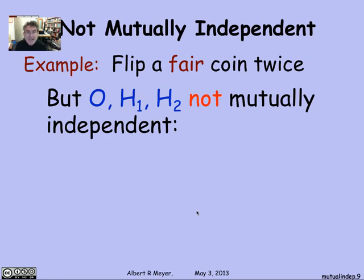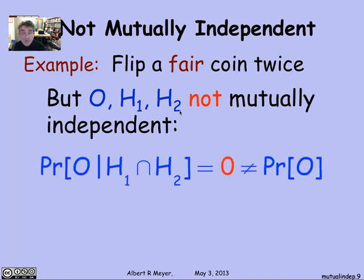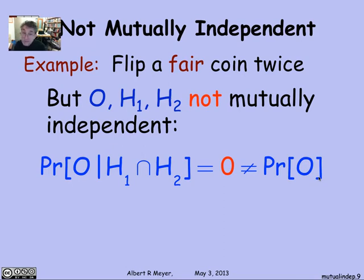But notice that O, H1, and H2 taken together are not mutually independent. If you know any two of them, you can determine the third. Explicitly, the probability of O given H1 ∩ H2 is zero, because knowing both flips were heads tells you there were two heads — an even number — so not odd. That probability of zero is not equal to the probability of O by itself, which was one-half. So the three events are not mutually independent, even though any two of them are.